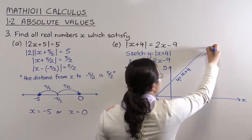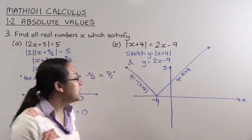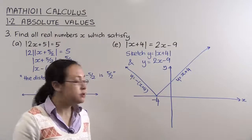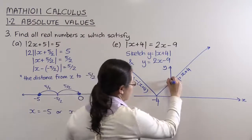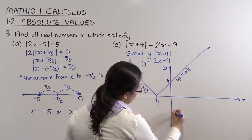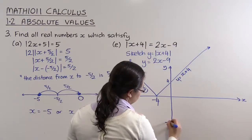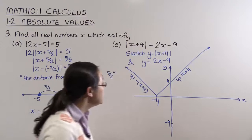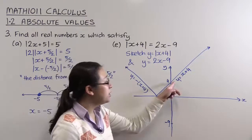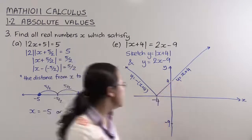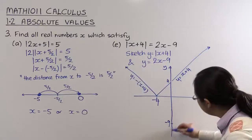Now, y equals 2x minus 9. That's a linear graph. It's got a y-intercept of minus 9. That's 4 there. So it's got a y-intercept of minus 9. And it has a gradient of 2. So that's steeper than this. That has a gradient of 1. Ours has got a gradient of 2. So it's a steeper graph.